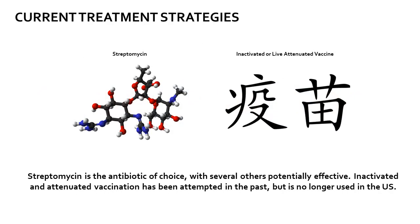Fortunately, antibiotic resistance has not been identified as a significant problem associated with Yersinia pestis to this day. Streptomycin remains an effective antibiotic when administered in a timely manner. Historically, live, inactivated, and attenuated vaccination has been at least anecdotally effective at prevention of transmission, limiting of severity, or stopping disease progression.